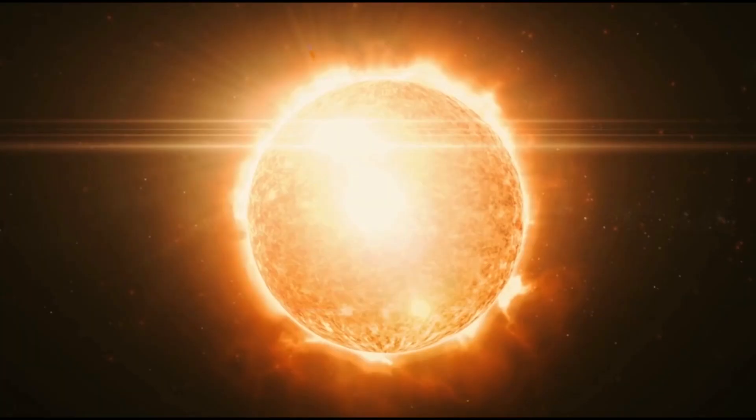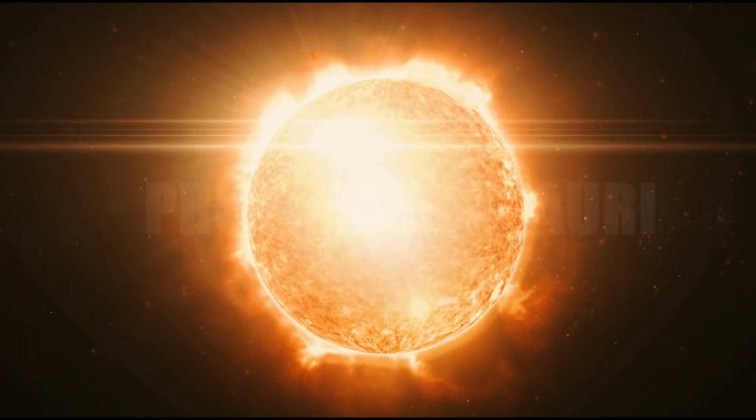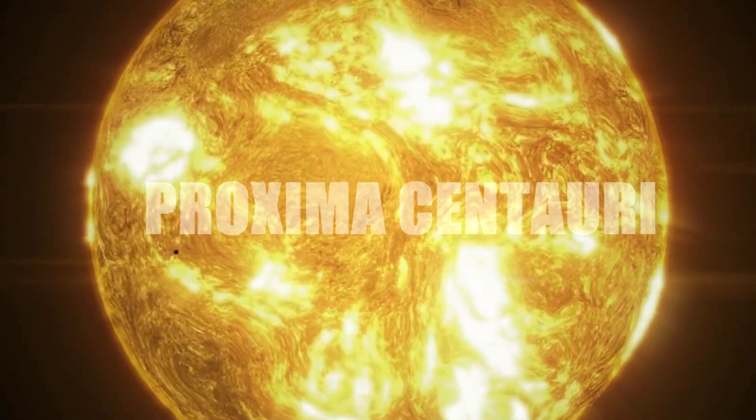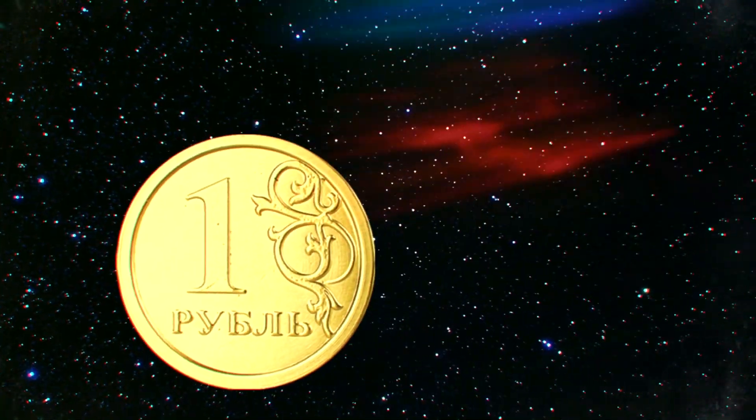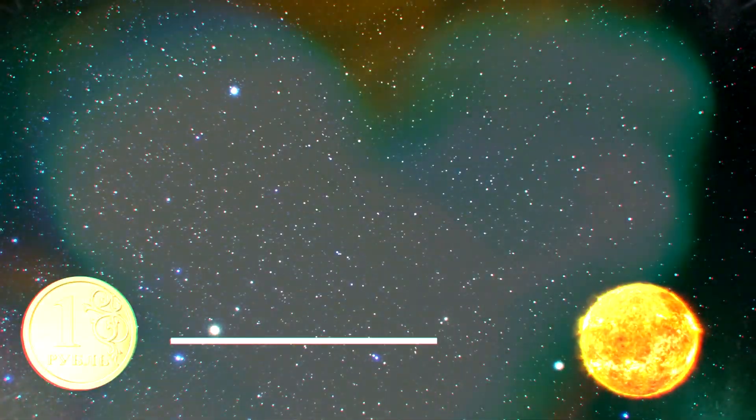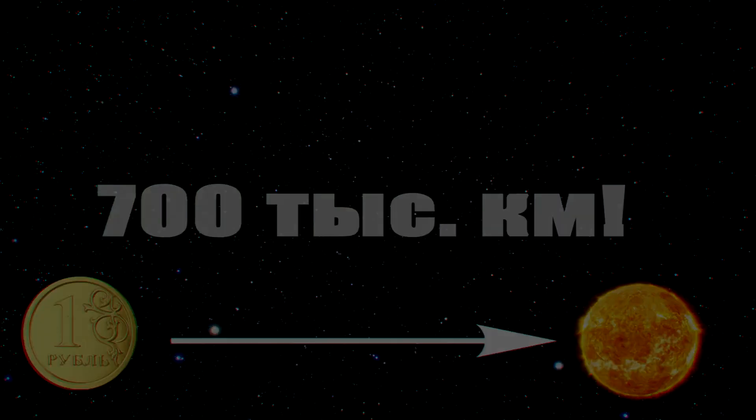Let's take for example the closest star from us after the sun, Proxima Centauri, which is at the distance of 4 light years away from us. Imagine that the sun is a tiny coin. At that scale, Proxima Centauri will be located at the distance of 7000 miles away from it.